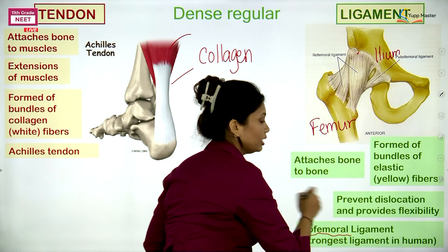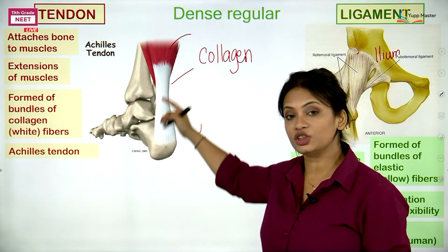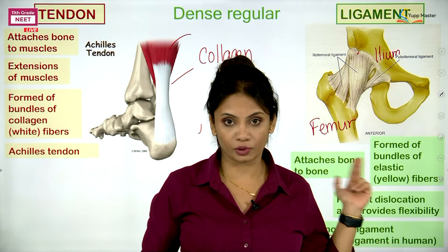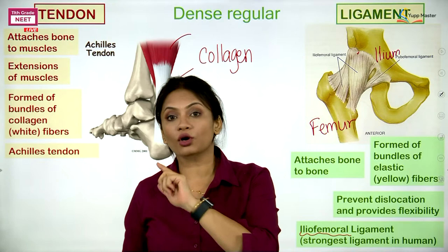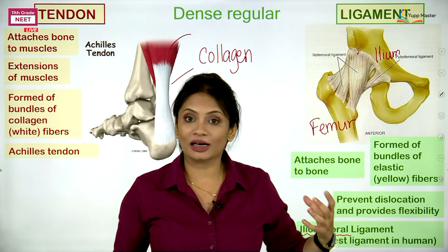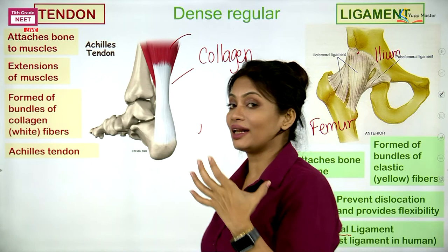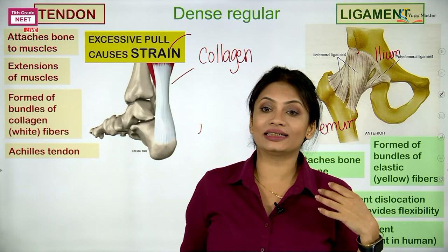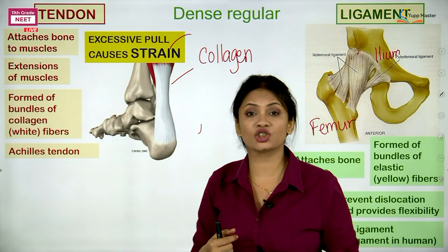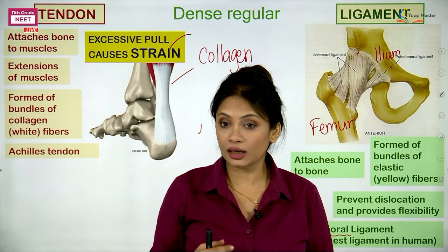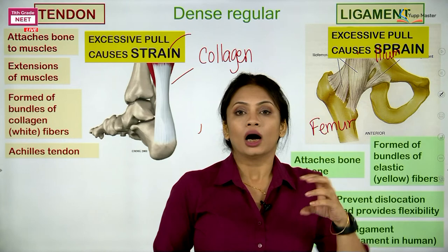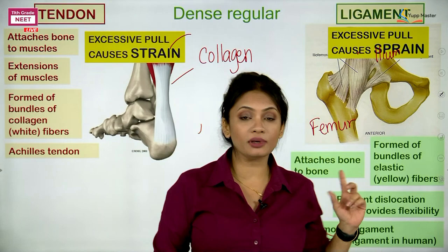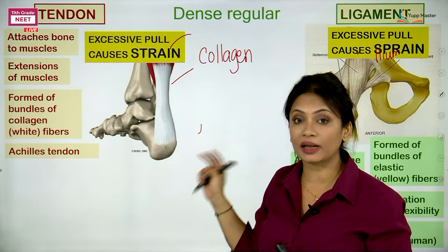To summarize: tendon joins the muscle to the bone; ligament joins the bone to the bone. Tendon is meant to provide strength, so it is made of white fibres. Ligament is meant to provide flexibility, so it is made of yellow fibres. If there is an excessive pull on a tendon, it leads to a strain. A sprain is a condition where there is an excessive pull on the ligament. Remember: T for tendon and T for strain.